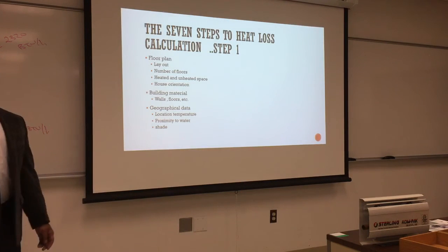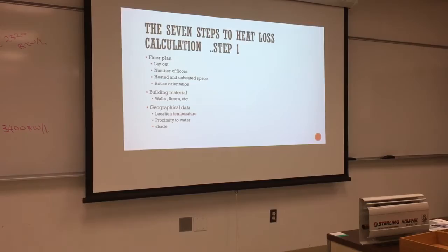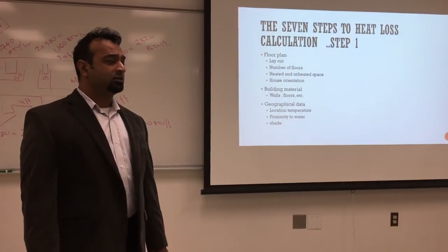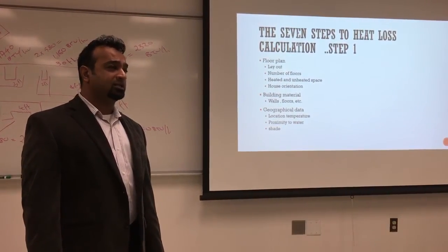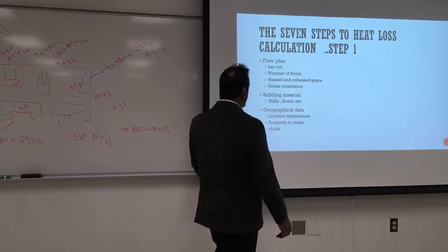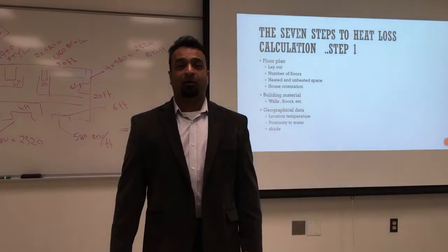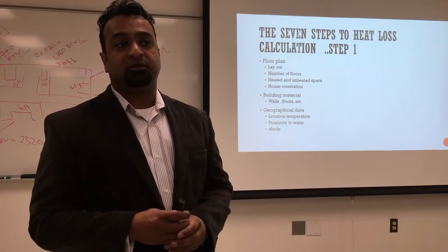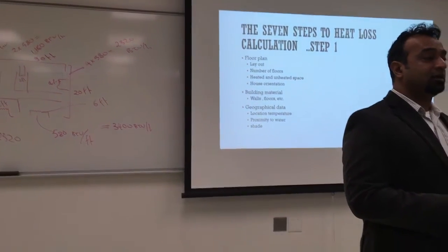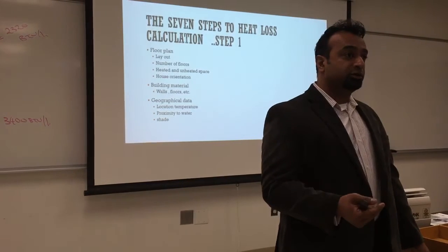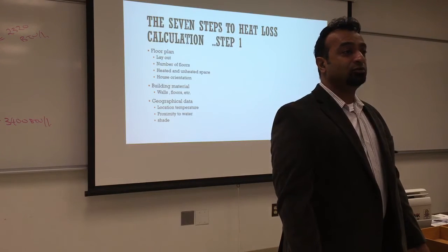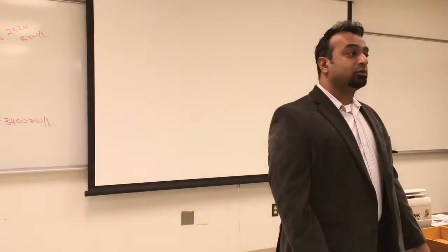Geographical data: get the location's temperature—the coldest day of the year for heating, and now also the hottest day of the year for cooling. For Springfield, the coldest day is zero Fahrenheit and the hottest goes to about 105–110°F, and that has been changing with more hot days. Also consider proximity to water—do you live by a pond, ocean, or lake? That affects your cooling load because you have to calculate humidity. If it's too humid, the AC has to dehumidify before it can cool, taking many extra BTUs.